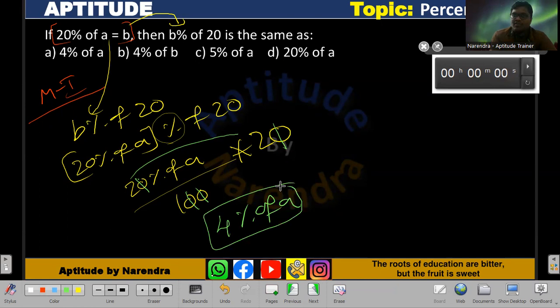The result is 4% of a, so the answer is the first option. Answer is option A. Now observe Method 2 in the same manner.